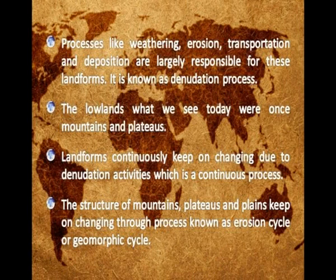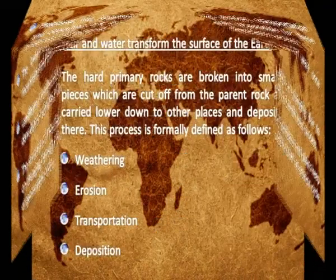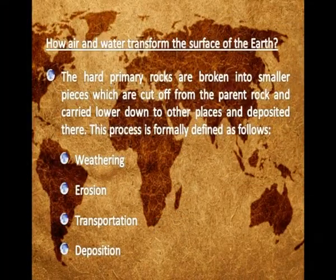The structure of mountains, plateaus, and plains keeps on changing through a process known as the erosion cycle or geomorphic cycle. The hard primary rocks are broken into smaller pieces, cut off from the parent rock, and carried lower down to other places and deposited there.